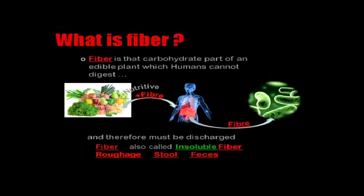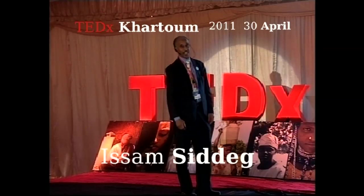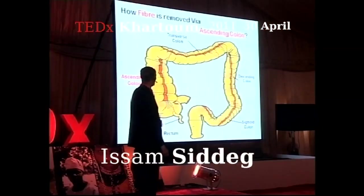Food contains digestible nutrients plus fiber. The human body digests the nutrients and removes the fiber. Fiber — also called insoluble fiber, roughage, stool, or feces — is removed via the ascending colon.